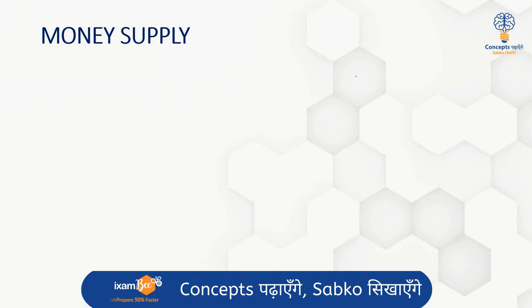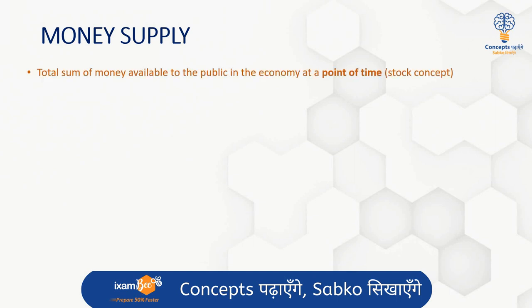Monetary aggregates — M0, M1, M2, M3, M4 — these are all the total money supply in any economy. The total sum of money that is available with the public is called money supply. And this is measured at a particular point of time — what is the actual money supply in the economy right now. So, this is a stock concept, not a flow concept.